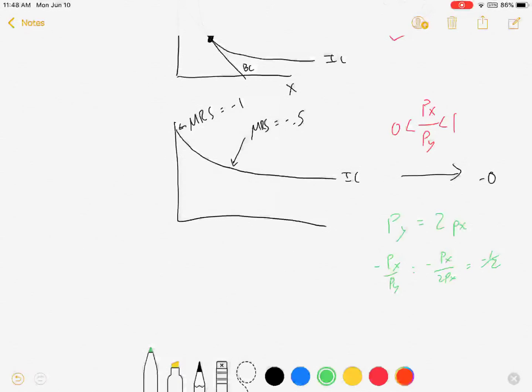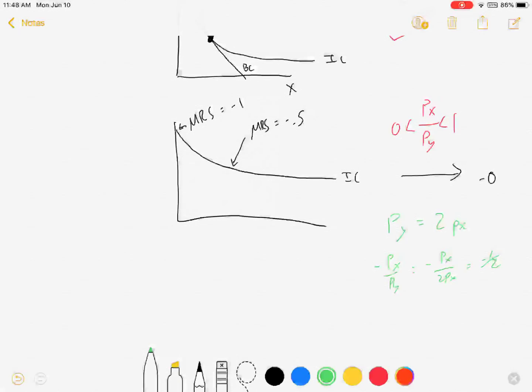Negative px over py equals minus px over 2px equals minus 0.5. There is a point where the marginal rate of substitution is minus 0.5, and that's at a point right there. We're going to pretend that's where the tangency is. We can still have an interior solution, even though our utility curve doesn't fit the standard assumptions.